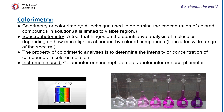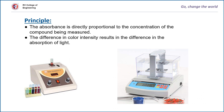The property of colorimetric analysis is to determine the concentration of the compounds in the colored solution. The principle of colorimetry depends on Beer-Lambert's law. Absorbance is directly proportional to the concentration of the compound being measured and optical path length. The difference in color intensities results in the difference in the absorption of light.